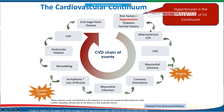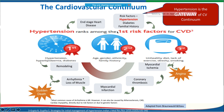For example, if someone has diabetes or hypertension, this leads to atherosclerosis or left ventricular hypertrophy, which further leads to coronary artery disease, myocardial ischemia, thrombosis, myocardial infarction, and arrhythmias — which further leads to remodeling, congestive heart failure, and finally end-stage heart disease. This is why it is called a continuum.